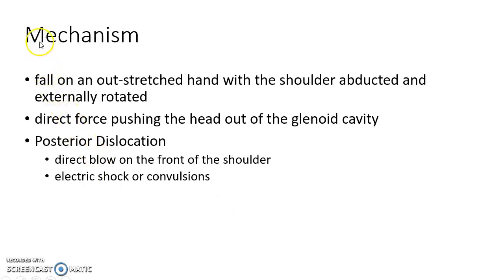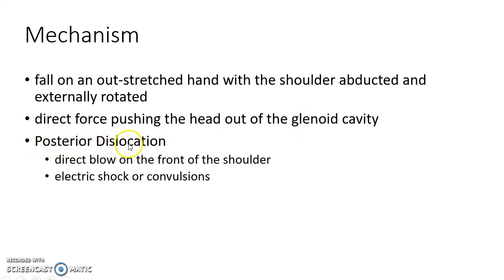Regarding the mechanism of shoulder dislocation, a fall on an outstretched hand with the shoulder abducted and externally rotated is the most common cause of anterior shoulder dislocation. It can also occur due to a direct force pushing the head out of the glenoid cavity. Posterior dislocation can occur from a direct blow on the front of the shoulder, or due to electric shock and convulsions.